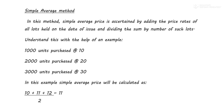The Simple Average Method is also an important method for your exam. In this chapter we cannot say what is important and what is not, because there are four methods and any of them can come in the exam — it's highly unpredictable. The simple average price is ascertained by adding the price rates of all lots held on the date of issue and dividing the sum by the number of such lots.